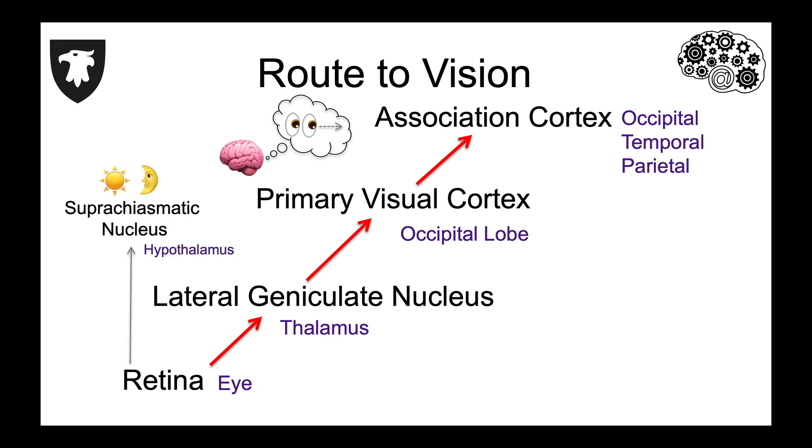There is another smaller projection from the retina to the hypothalamus to a structure called the suprachiasmatic nucleus, or SCN, which is responsible for controlling daily rhythms. This pathway has nothing to do with visual perception, but rather serves as a light detector, so the SCN can use this information about the light-dark cycle to schedule activities such as eating and sleeping.